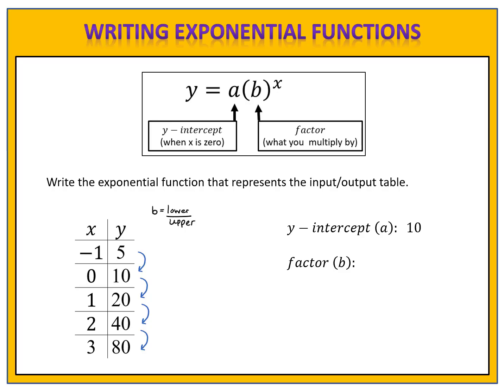It looks like we're multiplying by 2, so the factor b will be 2. If we weren't able to tell, we can always use the formula: b equals the lower divided by the upper. From 5 to 10, we take 10 divided by 5, which equals 2. From 10 to 20, the lower 20 divided by 10 equals 2. 40 divided by 20 is 2, and 80 divided by 40 equals 2. So the factor is 2.